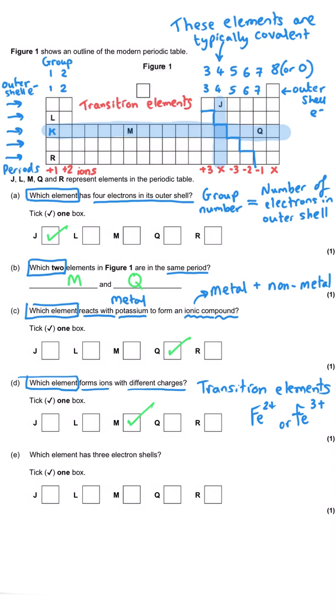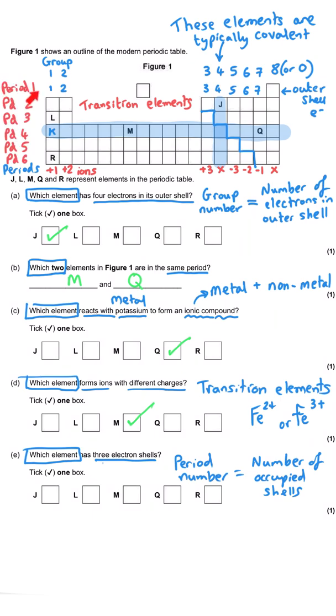Last of all, which element has three electron shells? The number of shells an element has is the number of periods in the periodic table. So period one is one occupied electron shell. The elements in period two have got two occupied electron shells. Period three has got three occupied electron shells, and so that is L. The correct answer here is L, because the number of electron shells that are occupied is simply the period number in the periodic table that you find that element in.